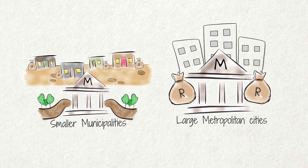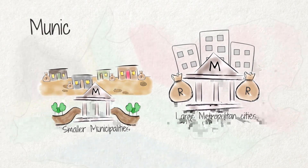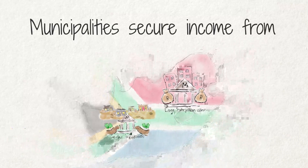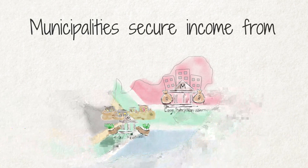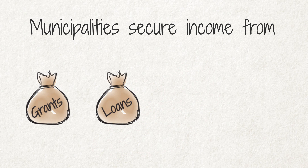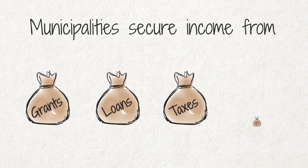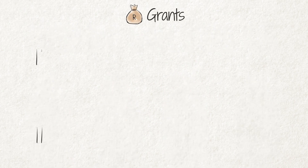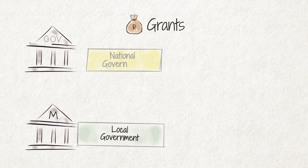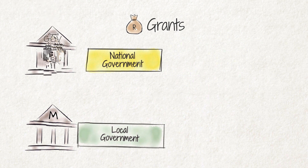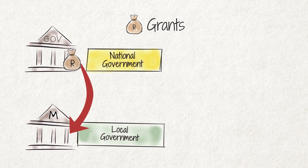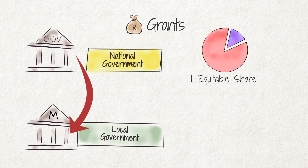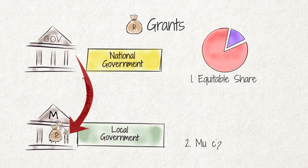Whatever their size or structure, all municipalities have to secure their income from the same sources, namely grants, loans, property taxes and user charges. All municipalities receive money in the form of grants from the taxes that the national government collects. One grant is the municipality's equitable share of the state's income from nationally collected taxes, and the other is the Municipal Infrastructure Grant.